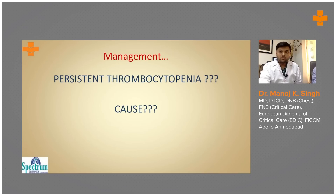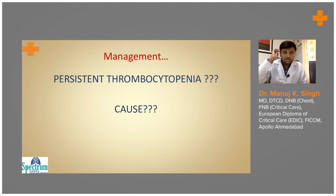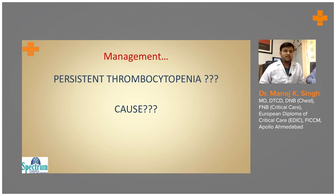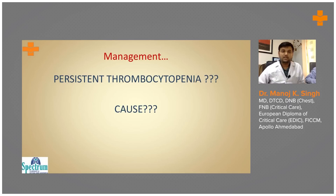To rule out causes of persistent thrombocytopenia, we did an ANA profile which came back negative. Viral markers including HIV, hepatitis B, and hepatitis C were also negative. The patient had no past history of recent blood transfusion and no significant menstrual history of menorrhagia.